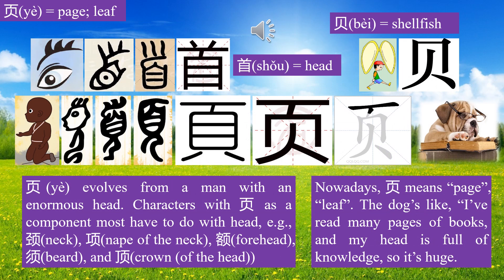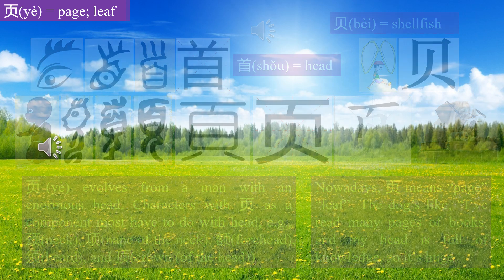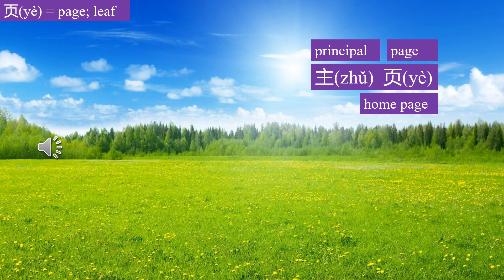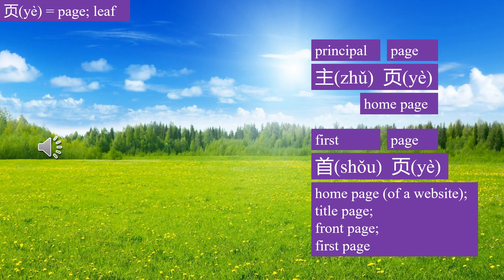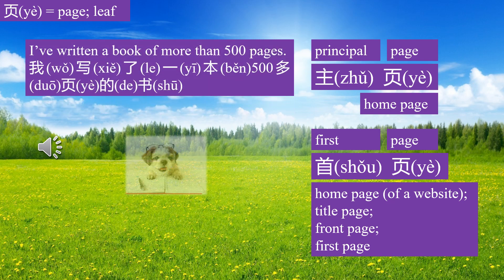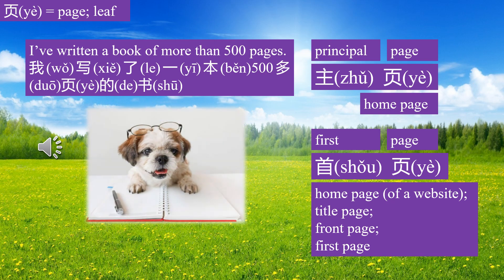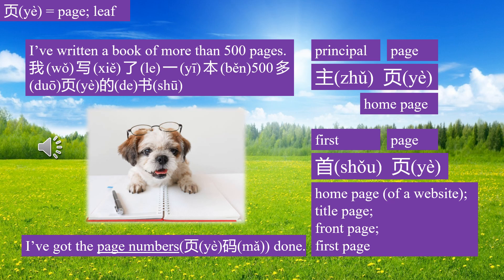Let's learn characters in word groups and sentences. Character Ye means page, leaf. 主页 means home page. 首页 means first page. I've written a book of more than 500 pages. 页码 means page number.